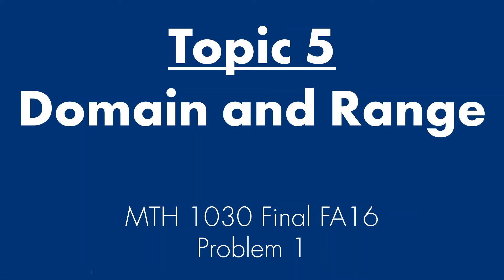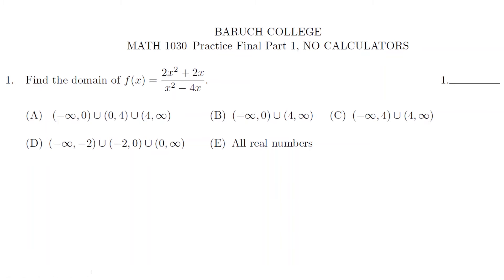Now, topic 5, domain and range. We're going to look at problem 1 from the final FA16. Here we need to look at the domain. For the domain, take the bottom, immediately set it to 0. That's it. x squared minus 4x equals 0. Let's factor this out. So x times x minus 4 equals 0. Therefore, x equals 0 or x equals 4. So these two must be eliminated. So if you have this whole number line, it's going to be everything from 0 and everything besides 4. So it's between negative infinity and 4 here, between 0 and 4 here, and between 4 and positive infinity. It's A.